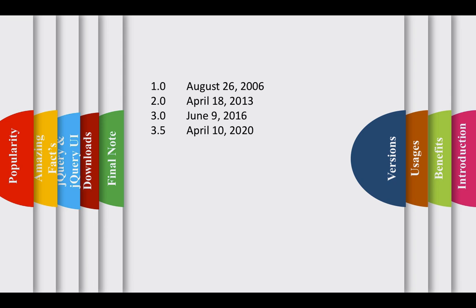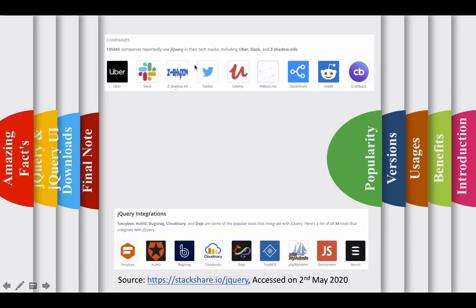Now let's discuss the popularity of jQuery. A large number of companies use jQuery in their tech stacks — 1,05,865 companies reported using jQuery. Big names include Uber, Twitter, Udemy, Stackshare, and many more. There are also 34 tools using jQuery, such as Cloudinary, Dojo, TinyMCE, PHPMyAdmin, DevExtreme, and more. You can visit stackshare.io/jQuery to find the full list of integrations and companies using jQuery.